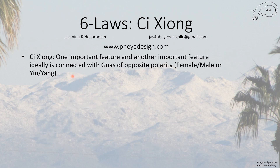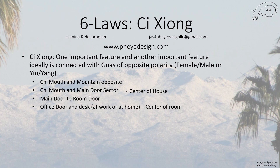The whole idea of the Qihong, beyond the mountain and locked Chi mouth being opposite one another, is that you're trying to link one important feature to another important feature through the Guas, and they need to be of opposite polarity. The four ways to link are: the locked Chi mouth and mountain opposite one another; the Chi mouth linked to the main door sector; the main door to the room door; and the room door to an important object. All of these use the center of the house as the center of your 24-mountain chart. Once you go down to a single room, you use the center of the room.